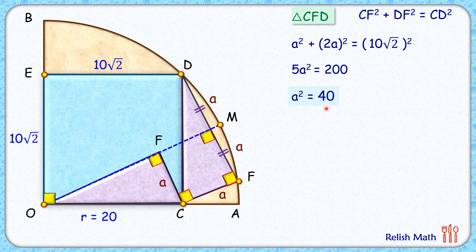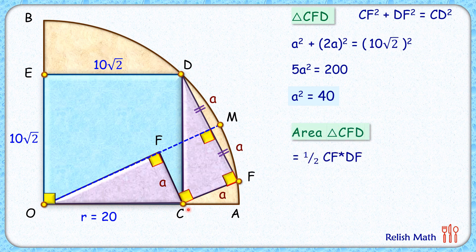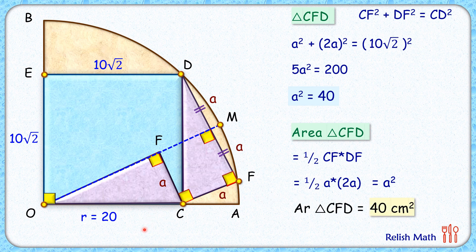So let's find the area of triangle CFD, which we have to find. That's half base into height, so half of CF into DF. CF is nothing but A, and DF is 2A. Simplifying it, we'll get area as A². And thus, area of triangle CFD is 40 cm², and that's our answer.